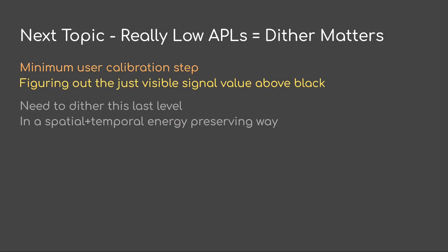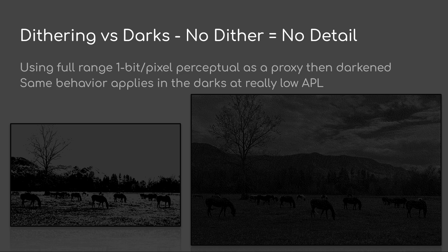Another thing we should discuss is that at really low APLs, dithering actually matters a lot. At a minimum, we would want a user calibration step to figure out the just visible signal value above black, and then inside the program we would dither this last level. On the left-hand side is the reference image stopped down done at one bit per pixel — if you arbitrarily threshold it, you're not going to conserve energy and you'll squash all the detail. On the right-hand side, using a simple error diffusion dither, you'll notice it maintains more of the perceptual energy of the scene as well as the detail. When you use a spatial-temporal dither, you won't see the individual dots — they'll be dancing around — and this will look quite a bit better in actual video.